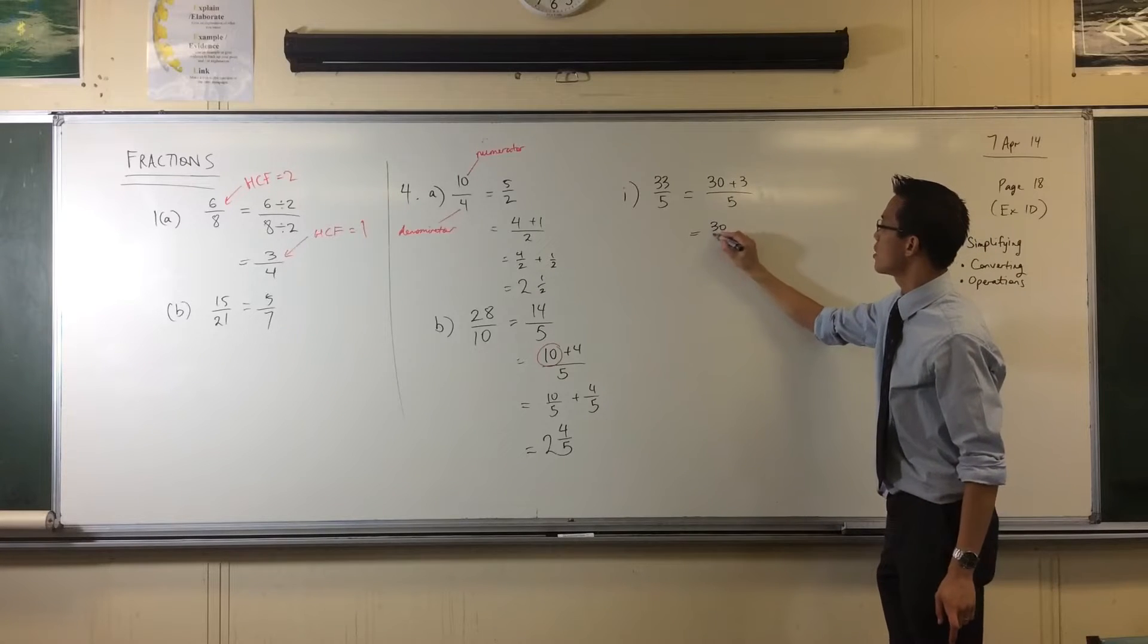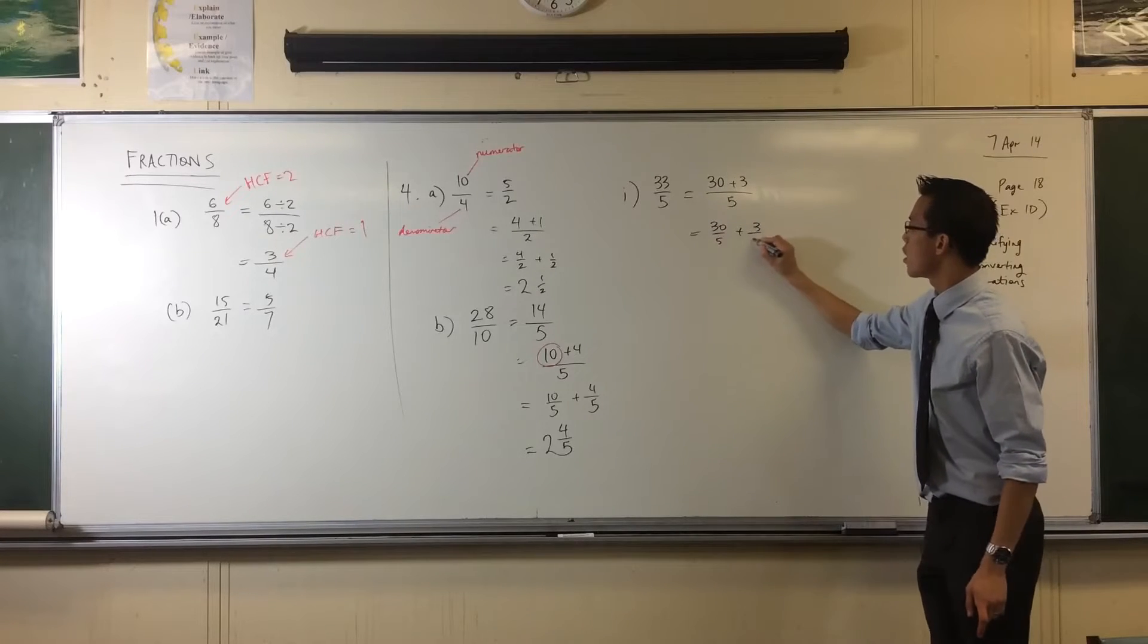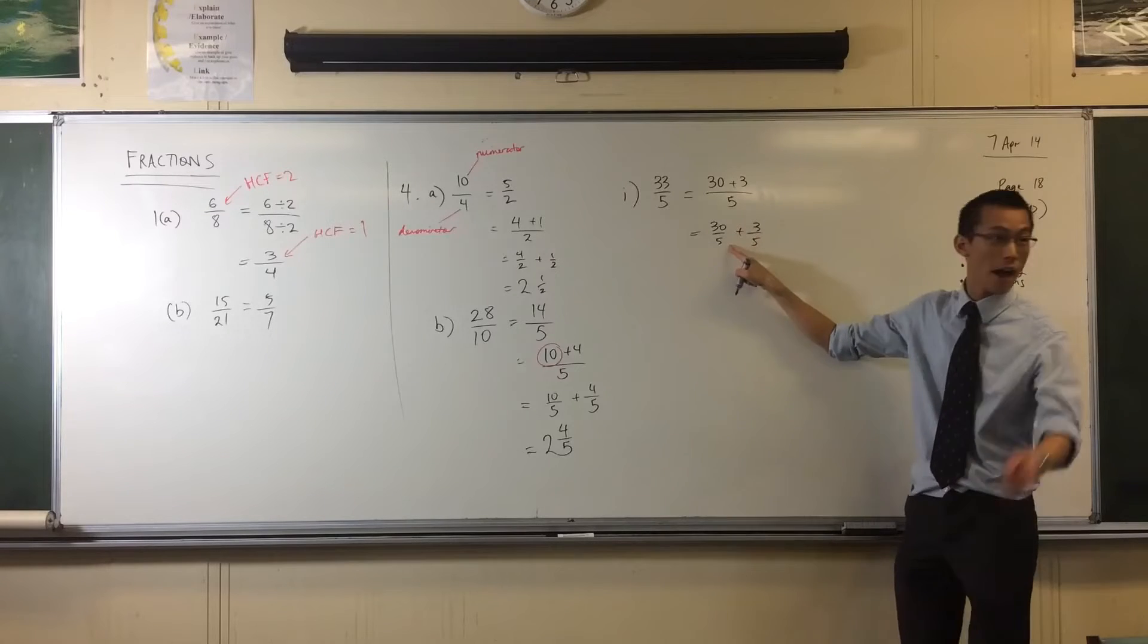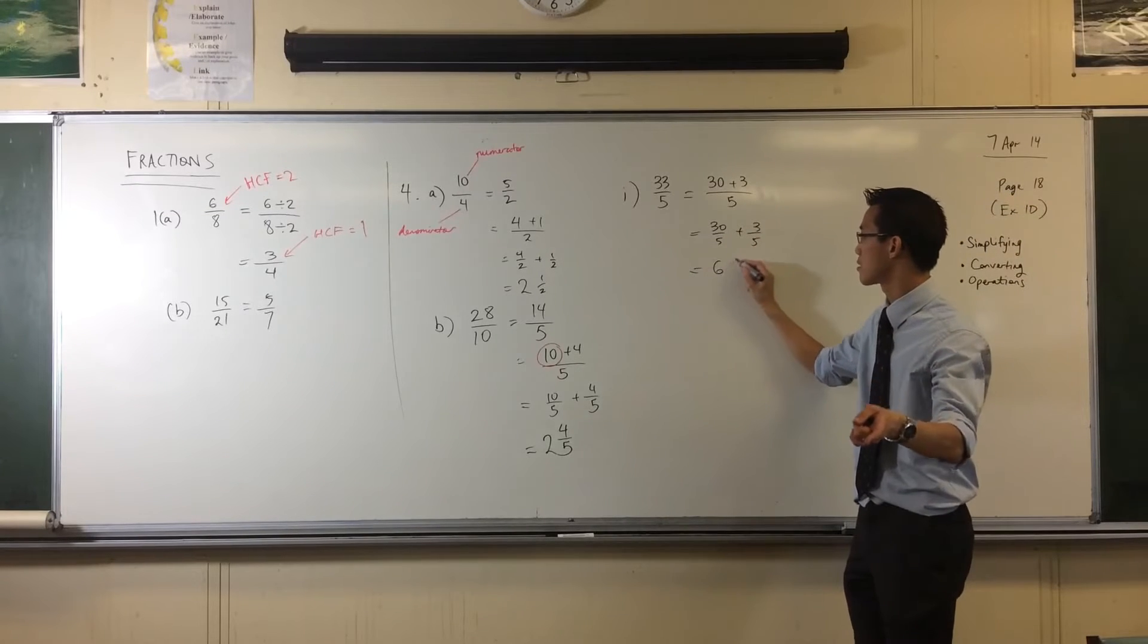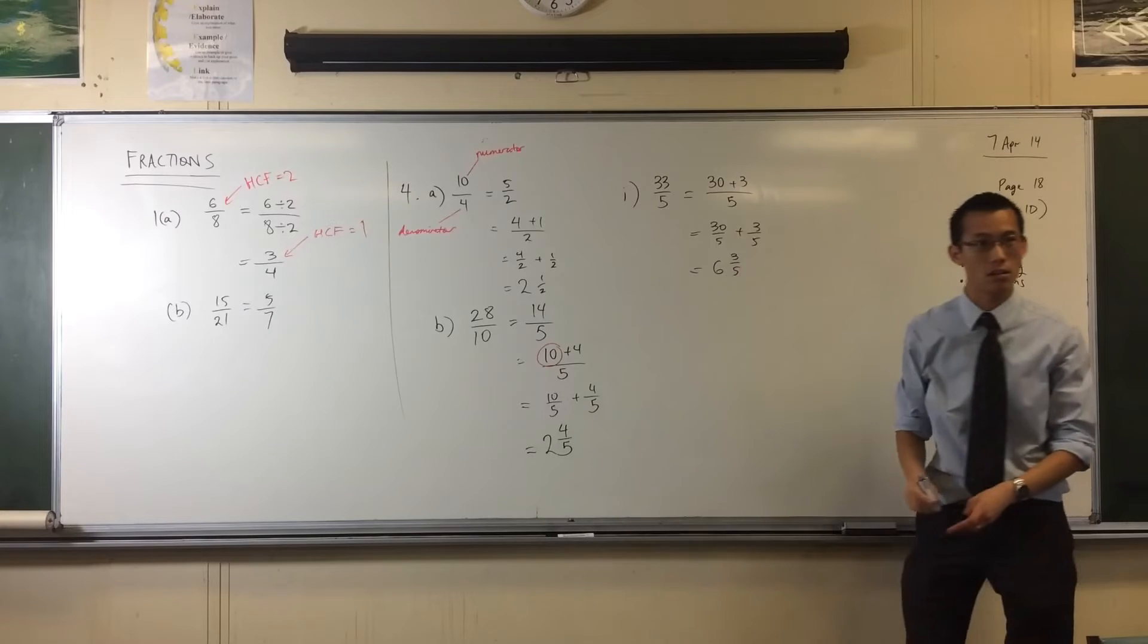Is that okay? See what I've done? So now I've got the 30 over 5 here, the 3 over 5 there. 30 divided by 5, just like you told me, is 6. There you go.